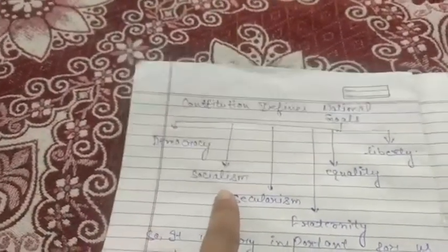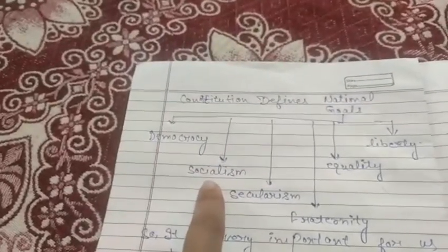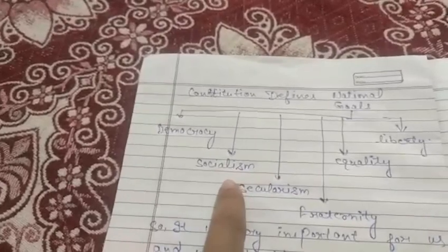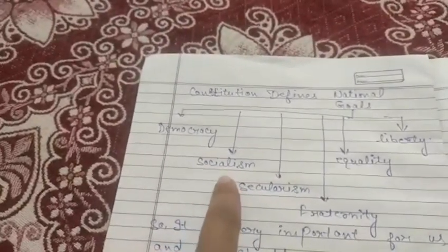Second one is socialism. It means in India all the people are equal. There is no discrimination on the basis of caste, color, culture and race.